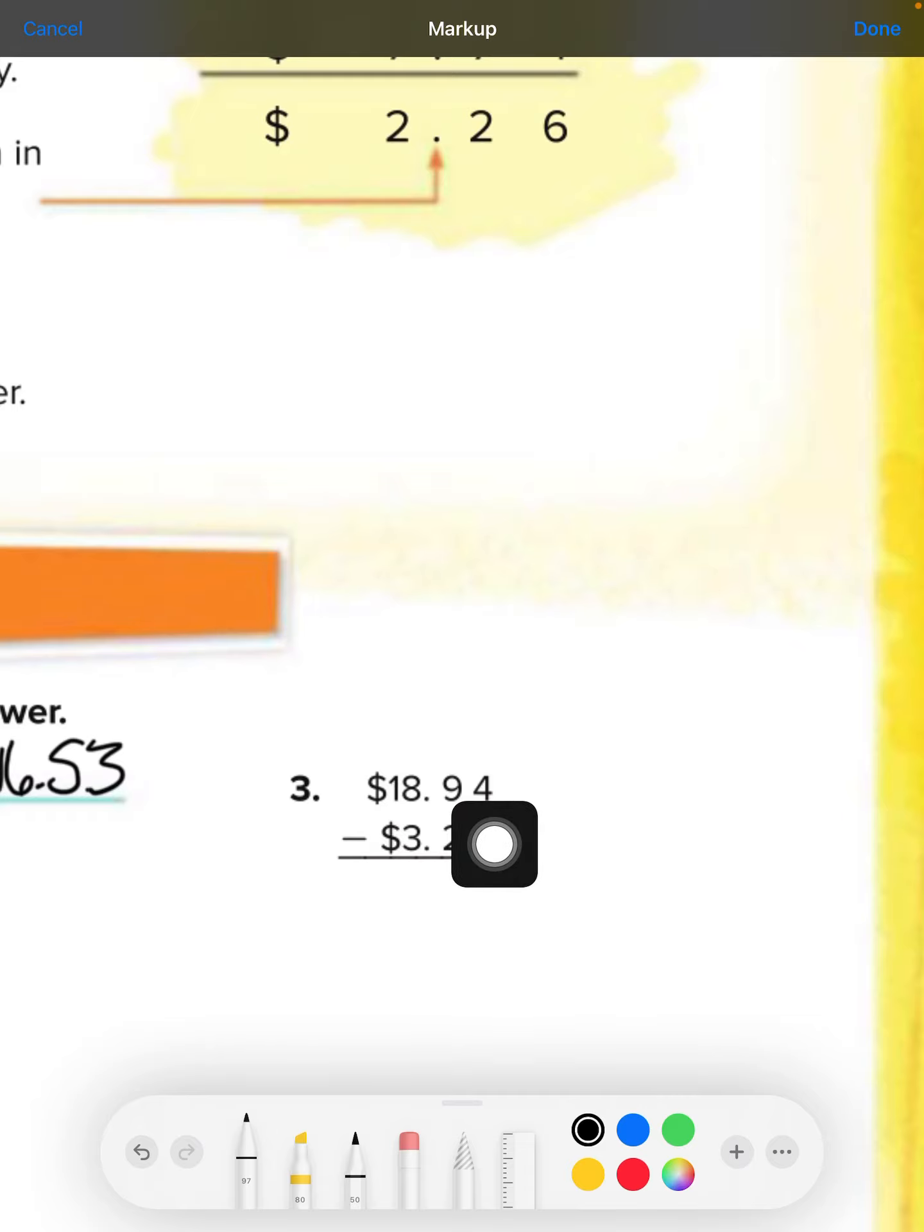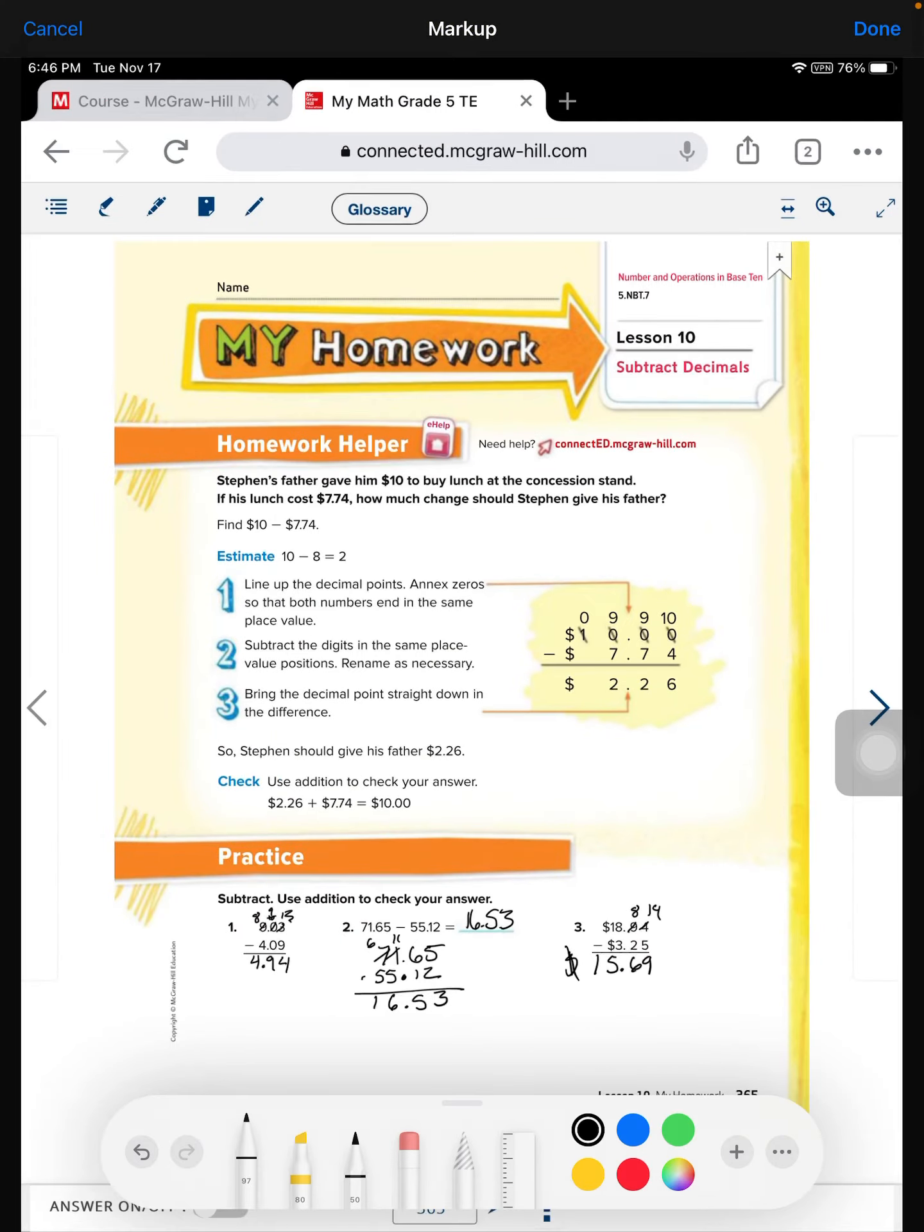Number 18. We cannot take 5 from 4, so we're going to have to borrow and regroup. So that's going to be 8, 14. 9 will be our answer. 8 minus 2 is 6. Bring down the decimal. 8 minus 3 is 5. Bring down the 1 and the dollar sign. $15.69.